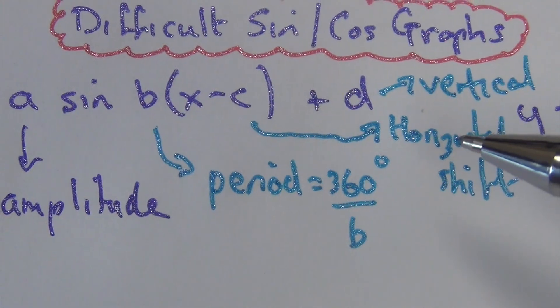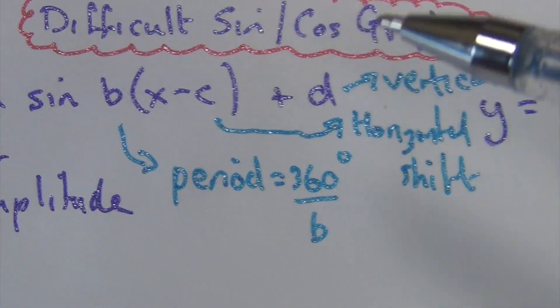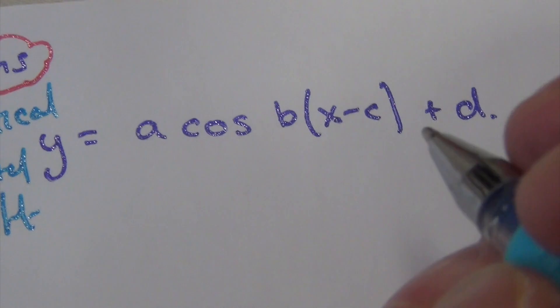The C is the horizontal shift, left and right. And D is the vertical shift, left and right. And the same for cos here.